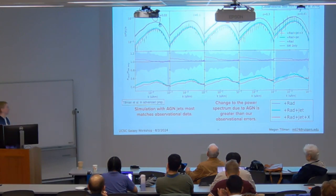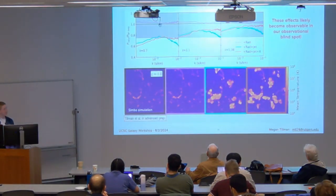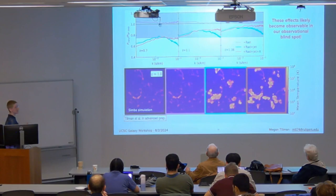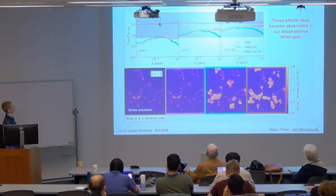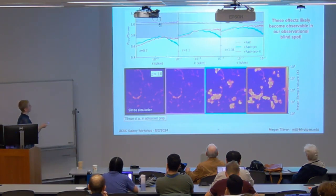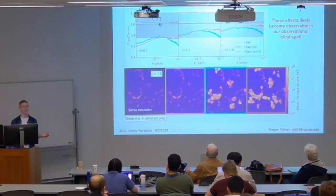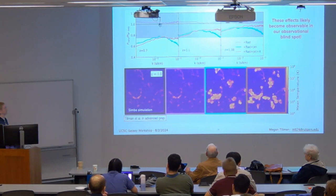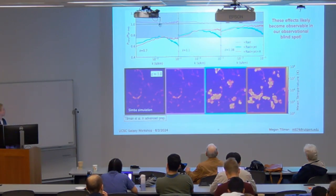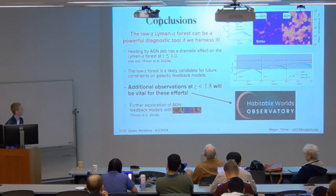Looking at intermediate redshifts where we have no observational data — assuming we could get data with errors similar to what we have at low redshift, around 25% — the effects of AGN feedback become observable right in the middle of our observational blind spot, around k ~ 1. In theory, if we were to get observational data here, it would be very interesting to analyze, because clearly something interesting is happening in this range — but we have no way to test it against observations, at least with Lyman alpha.